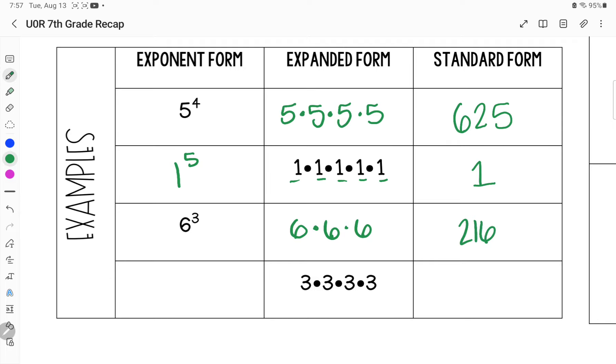And our last one, we can see they've given us the expanded form. Three must have been my base number, because that's the number that was repeated. It was repeated one, two, three, four times. So three to the fourth power. You can put it in your calculator as three to the fourth power, or three times three times three times three. Either way, you'll get 81.